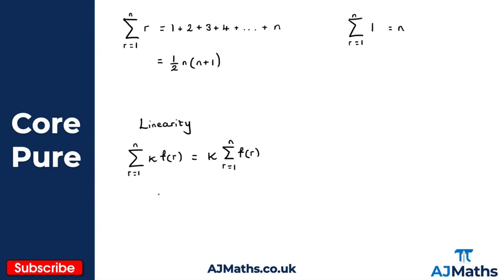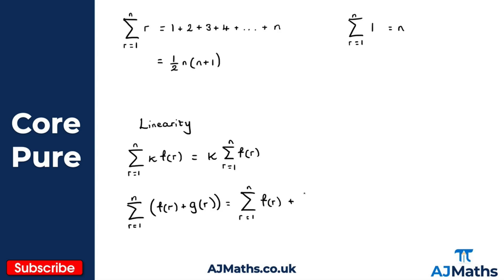We also have one more aspect of linearity. If I have the summation from r equals 1 to n of f of r plus g of r, I can apply linearity by splitting up the bracket into two individual summations: the summation from r equals 1 to n of f of r, plus the summation from r equals 1 to n of g of r. These two results of linearity are really, really important and we'll see them a lot more in exam revision on series and summations.